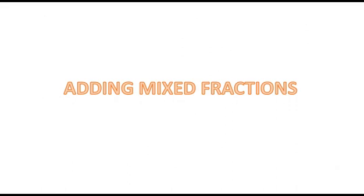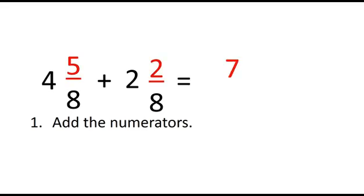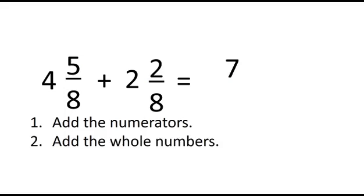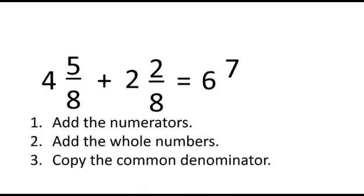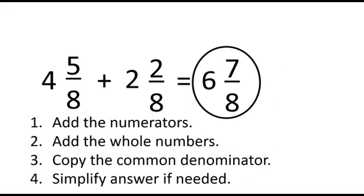Adding mixed fractions. Let's add 4 and 5 eighths and 2 and 2 eighths. First, add the numerators: 5 plus 2 is 7. Next, add the whole numbers: 4 plus 2 is 6. Copy the common denominator — 8 is our denominator. Simplify the answer if needed. 7 eighths is in simplest form, so our final answer will be 6 and 7 eighths.